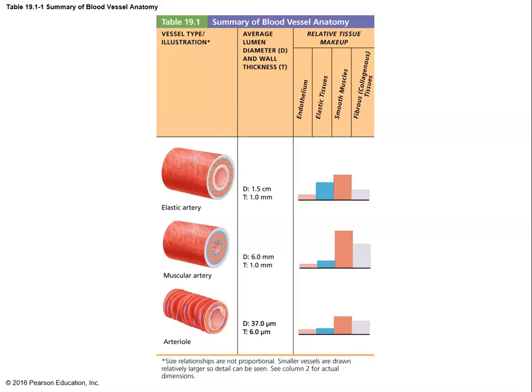Muscular arteries then lead to arterioles, which are much smaller — now measured in micrometers instead of centimeters or millimeters. Their composition percentage-wise isn't that different from muscular arteries, just smaller. The key point about arterioles is that this is where most blood pressure regulation in the body occurs, and that's really important.